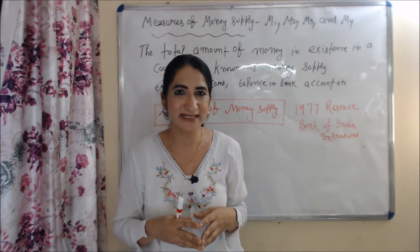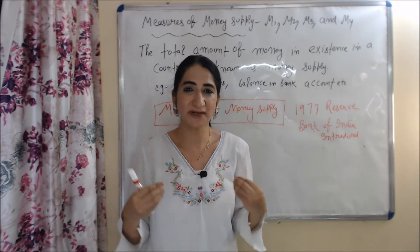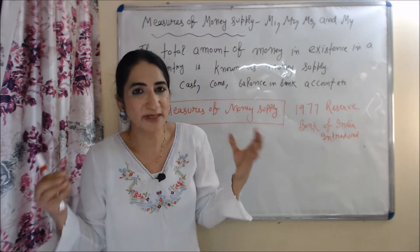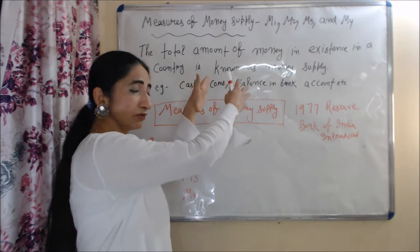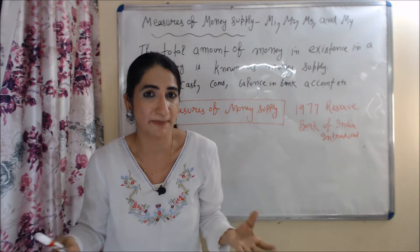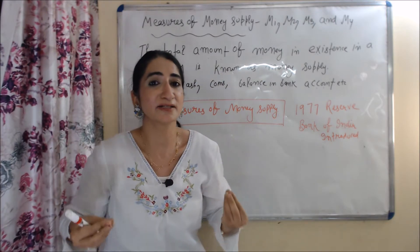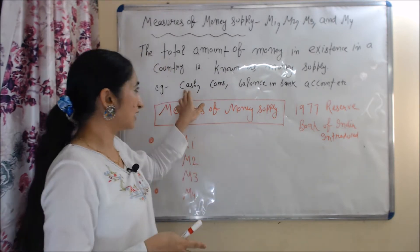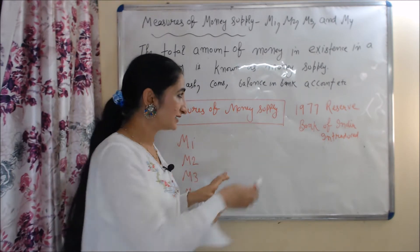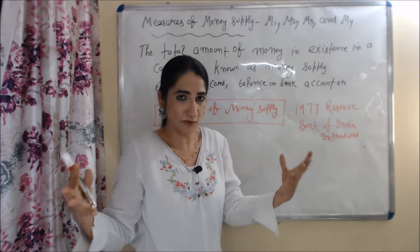Hello everyone, my name is Mini Sethi. I hope you all are staying healthy. Today we are going to talk about measures of money supply. The total amount of money in existence in a country is known as money supply — for example, cash, coins, balance in bank account, etc. In 1977, Reserve Bank of India introduced four measures of money supply.